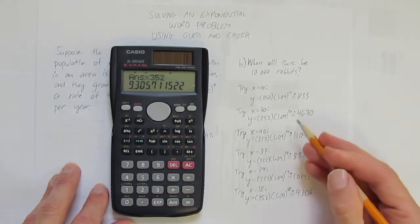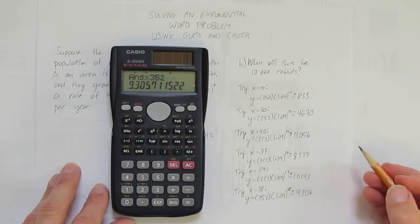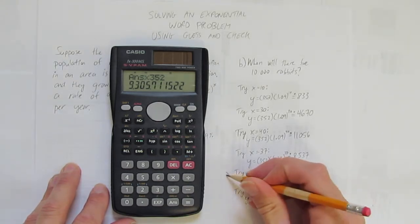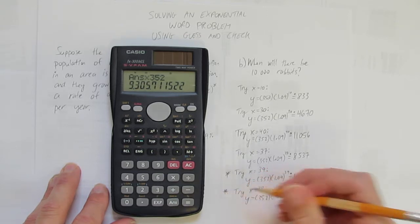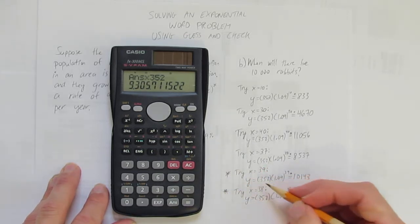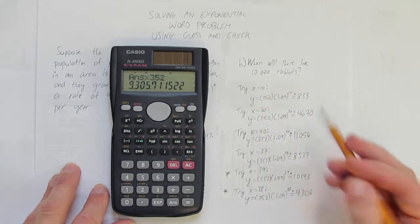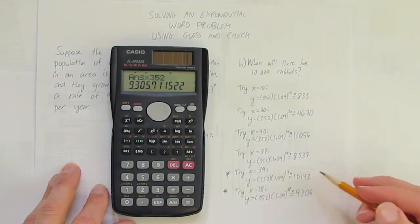So, I showed you all my work, but on a test you'd have to show me at least these two. If you want to guess and check on your calculator first until you get closer, that's fine, but you need to at least show the closest whole number below 10,000, and the closest whole number above 10,000.